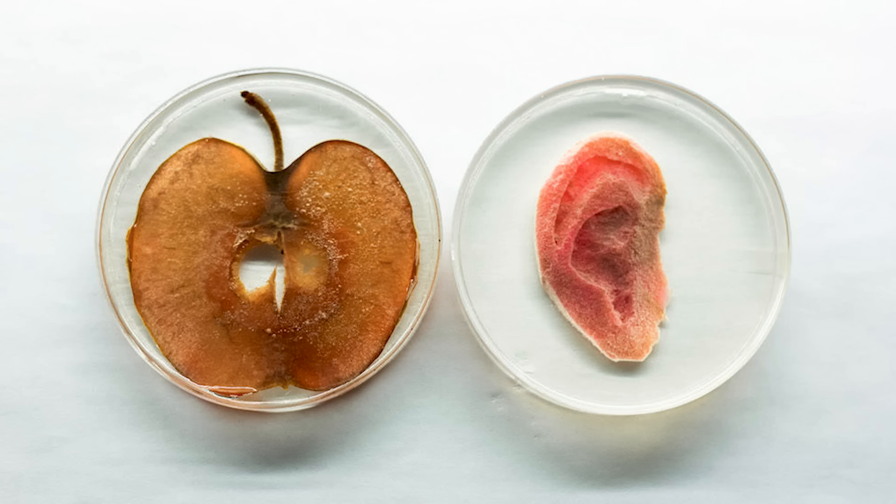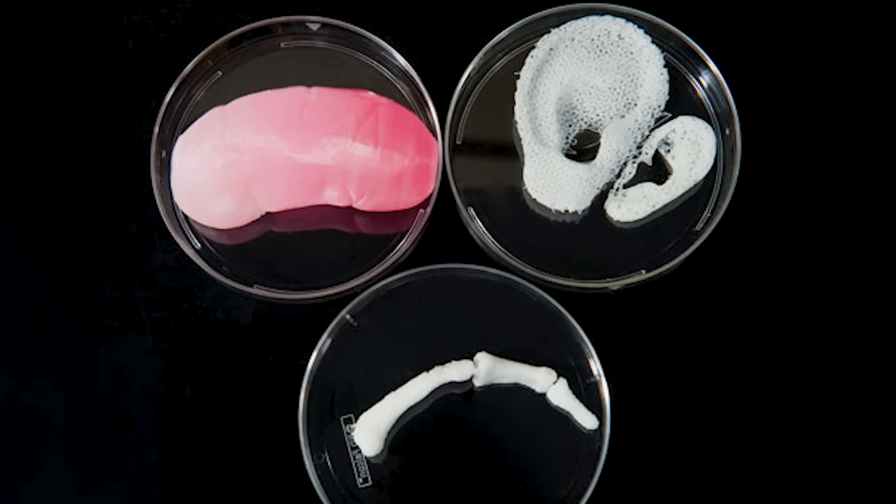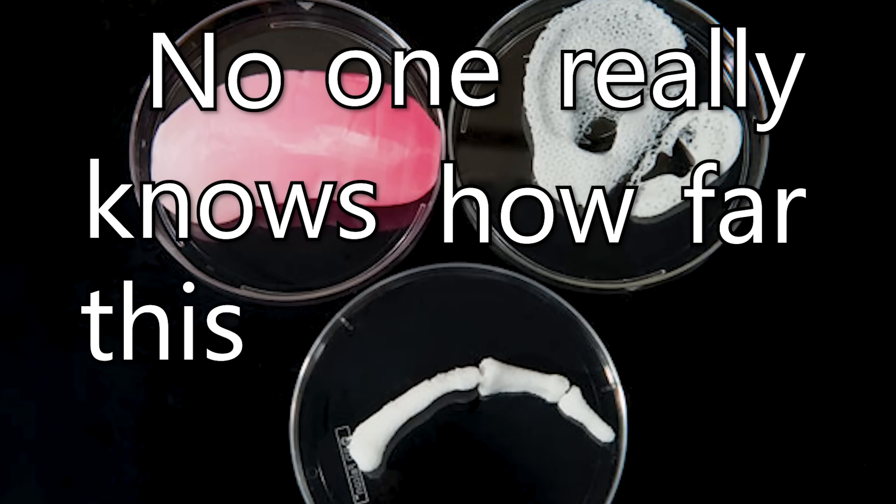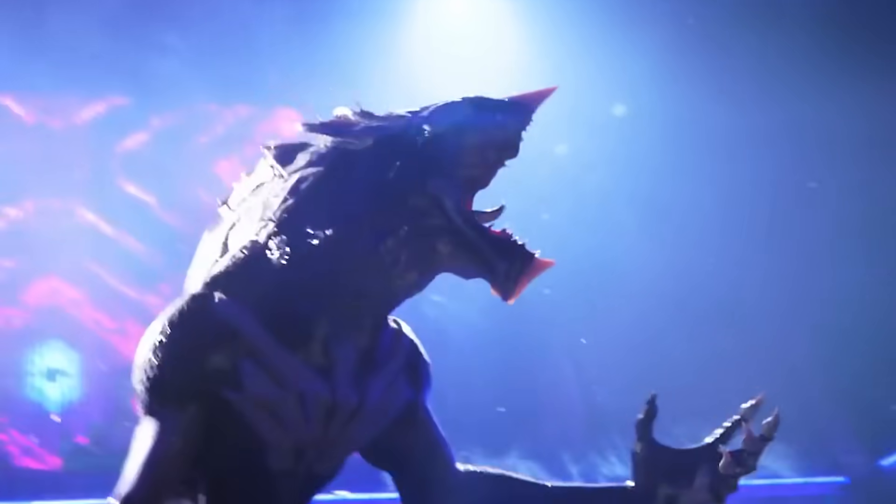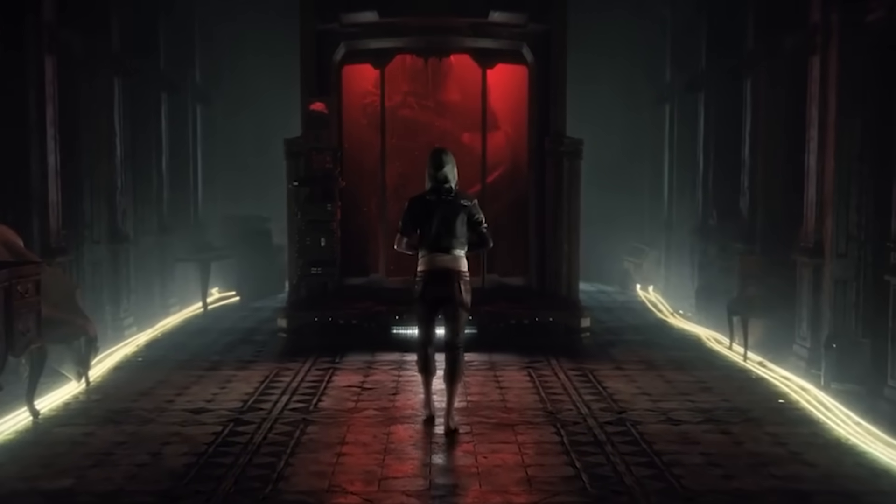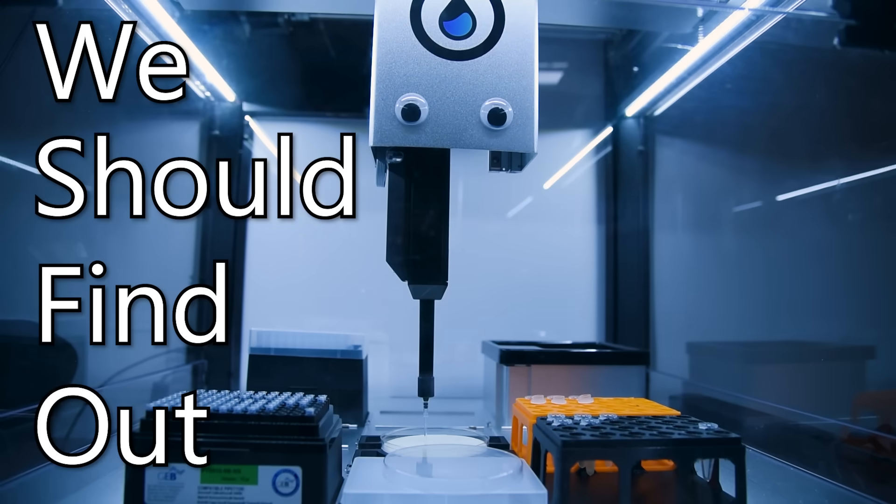The field of tissue recellularization and bioprinting is still incredibly new. So while lots of groups have made a lot of very interesting demos and proofs of concept, no one really knows how far this technology can go. For all we know, it's possible to make a real-life version of carnivore from Love, Death, and Robots, if only you're clever enough and build up enough of the infrastructure and know-how. So what I propose is, we should find out.